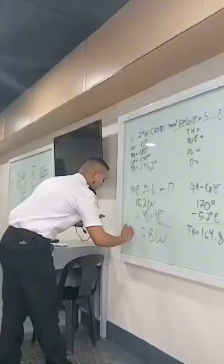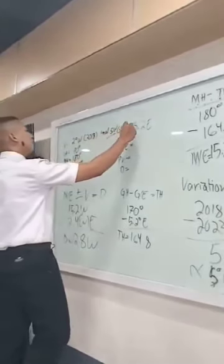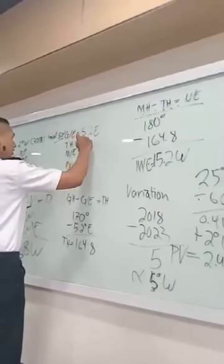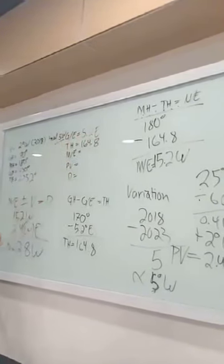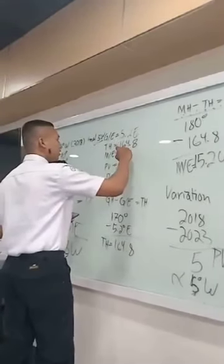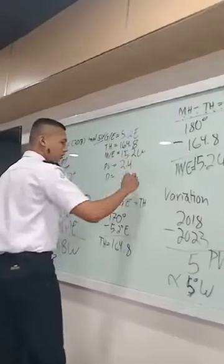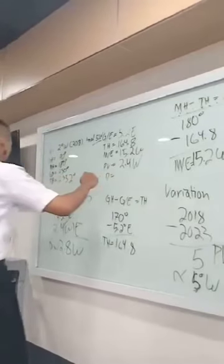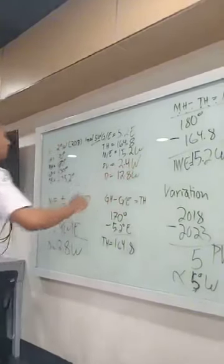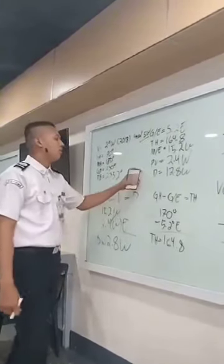So our gyro error is 5.2 east. Then true heading is 164.8. Then magnetic error is 15.2 west. And our variation is 2.4 west. And our deviation is 12.8 west. And that's how to get the gyro error, true heading, magnetic error, variation, and deviation.